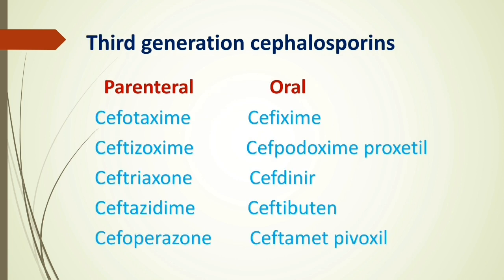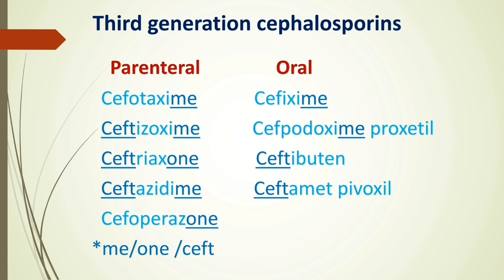Now let's see third generation cephalosporins. This is a slightly larger list, but there is an easy way to study it. Both parenteral and oral formulations are available. The cephalosporins with the suffix '-ime' or '-one' fall into the third generation category. For example, parenteral formulations like cefotaxime, cefoxime, and ceftazidime, and oral formulations like cefixime and cefpodoxime proxetil — all end with the suffix '-ime'.